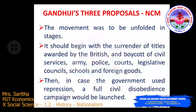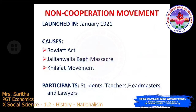Gandhi proposed three stages for the non-cooperation movement. First, the movement was to be unfolded in stages, beginning with the surrender of titles awarded by the British and the boycott of civil services, army, police, courts, legislative councils, schools, and foreign goods. Then, if the government used repression, a full civil disobedience campaign would be launched.